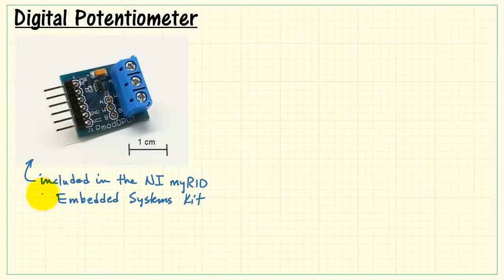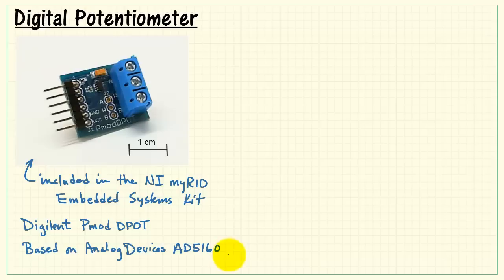Here's the digital potentiometer that's included in the NI myRIO Embedded Systems Kit. It's the Digilent PMOD DPOT device, based on the Analog Devices AD5160.